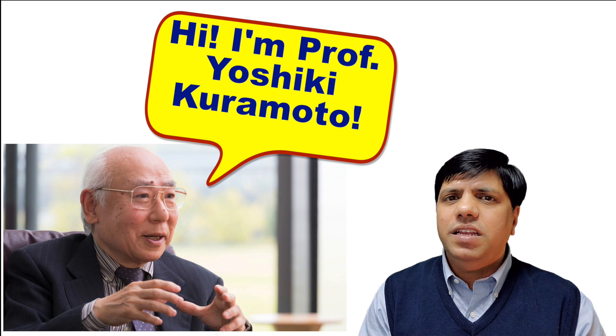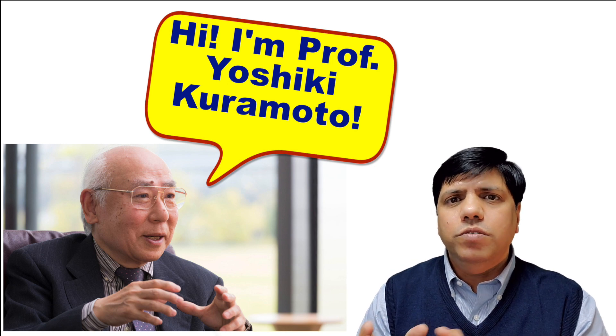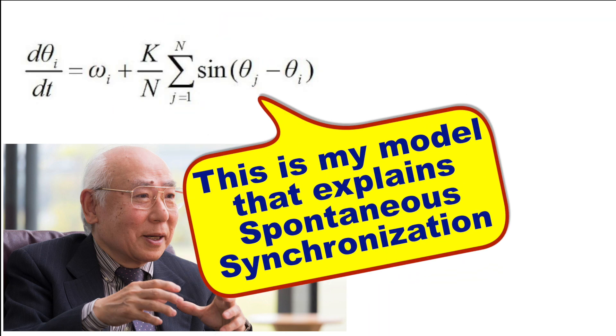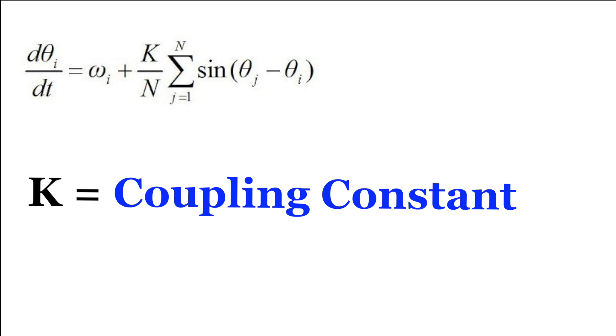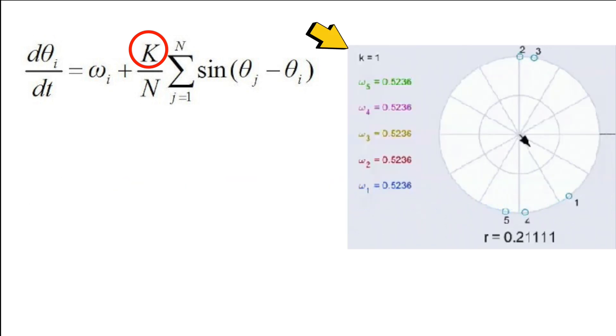And so he developed this thing called the Kuramoto model, and this equation actually defines the Kuramoto model. For the purposes of this video, the only thing that you have to focus on is the term K. Now K is what we call coupling constant, and it has been observed that as long as K tends towards one, the value one, spontaneous synchronization is actually possible.